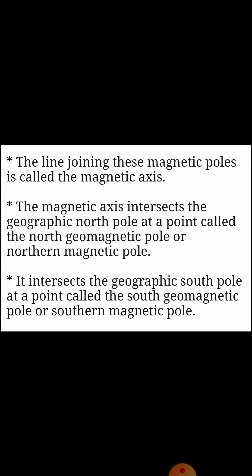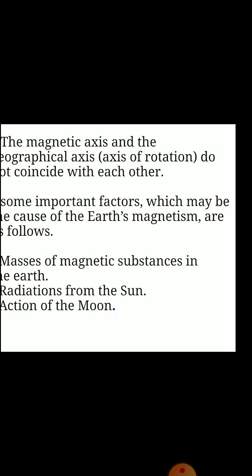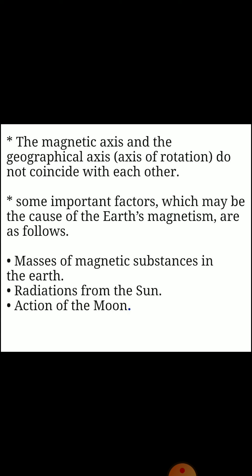It intersects the geographic south pole at a point called the south geomagnetic pole or southern magnetic pole. The magnetic axis and the geographical axis of rotation do not coincide with each other. Some important factors which may be the cause of the earth's magnetism are: masses of magnetic substance in the earth, radiation from the sun, and actions of the moon.